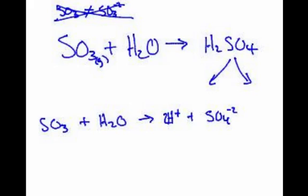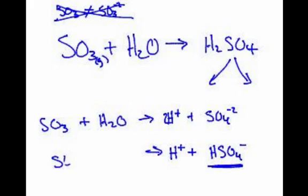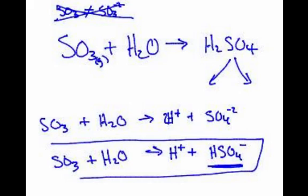You would write SO3 plus H2O. This one actually has two correct answers. It makes 2 H positive plus sulfate, or you could write H positive plus HSO4 negative. This is actually the more correct answer, but either one will get you full credit on the AP test.